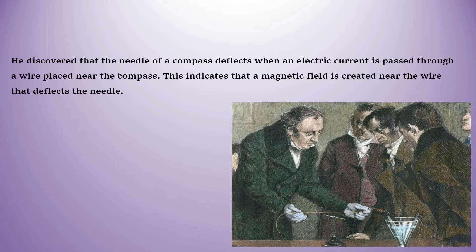Oersted discovered that the needle of the compass got deflected when electric current passed through a wire placed near the compass. This shows that when electric current passes through any circuit, a magnetic field is generated. That means the wires behave like a magnet, and because of this, the needle of the compass placed nearby shows deflection. This is known as the magnetic effect of electric current.